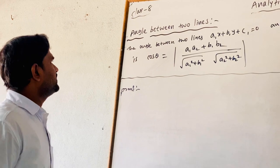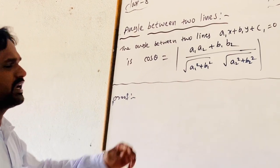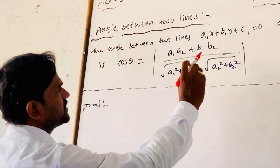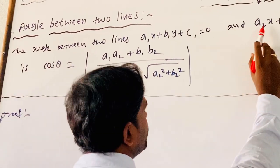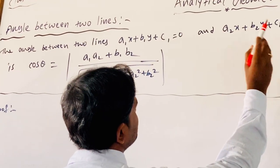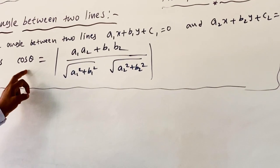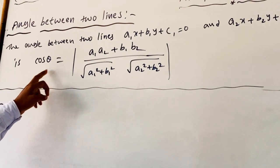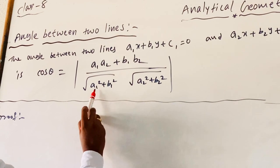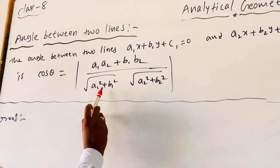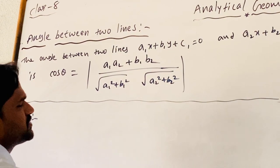Now we are finding the angle between two straight lines. The two straight lines are: a1x + b1y + c1 = 0 and a2x + b2y + c2 = 0. The angle is given by: cos θ = |a1a2 + b1b2| / (√(a1² + b1²) × √(a2² + b2²)).